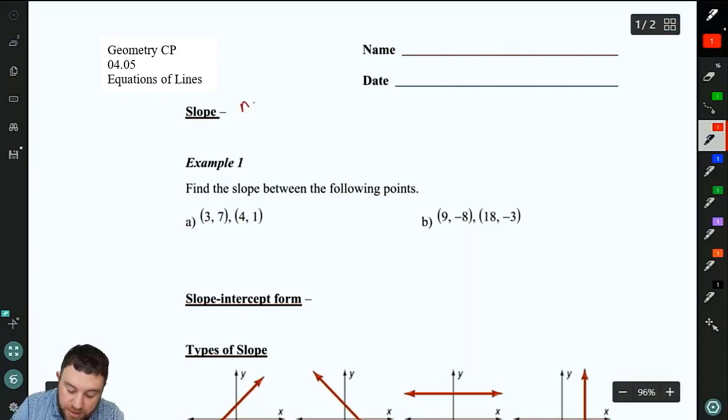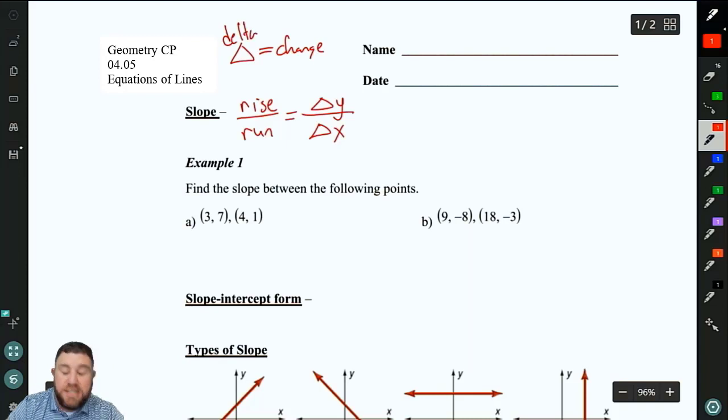So recall that slope, some people say rise over run. That's one way to define slope. Or the change in y over the change in x. Remember this means change, that triangle that's called a delta. It's a lowercase Greek d. You most likely use that in science class, not in math class, but it means the same thing.